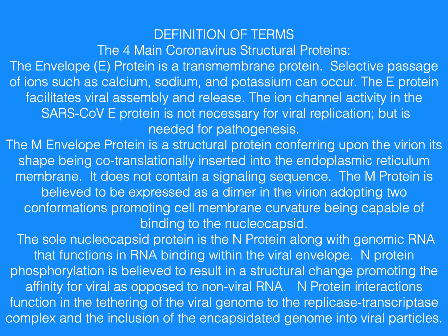The M envelope protein is a structural protein conferring upon the virion its shape, being co-translationally inserted into the endoplasmic reticulum membrane. It does not contain a signaling sequence. The M protein is believed to be expressed as a dimer in the virion, adopting two conformations promoting cell membrane curvature and being capable of binding to the nucleocapsid.